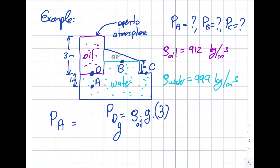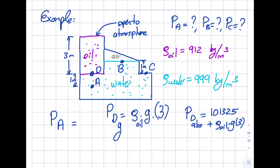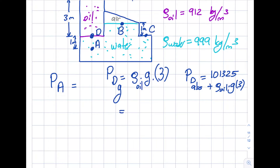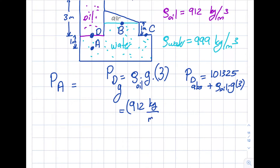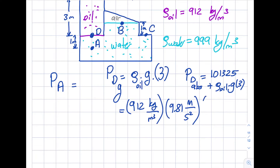Is this absolute or gauge terminology? This is gauge. If somebody asks for absolute, you write: 101,325 (atmospheric pressure) plus ρ_oil times g times 3. I'll calculate both for your purposes. The density of oil is given as 912 kilograms per meter cubed, g is 9.81 meters per second squared, and the height is 3 meters. How do I get Pascals? Don't panic — we'll do it together.